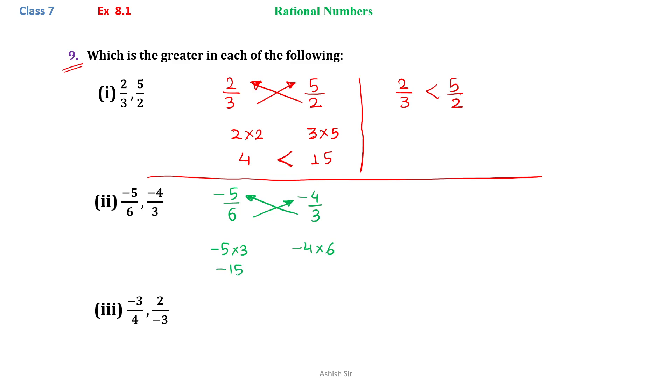We get minus 15 on the left and minus 24 on the right. It's clear that minus 15 is greater than minus 24. So we can write that minus 5 by 6 is greater than minus 4 by 3.